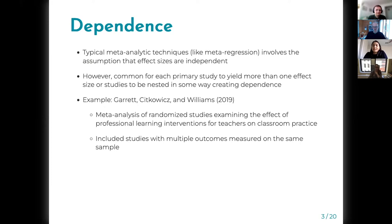Typical meta-analytic techniques like meta-regression involve the assumption that effect sizes are independent. It's basically the independence assumption in a regression model, but it's common for each primary study to yield more than one effect size, or for studies to be nested in some way creating dependence among the effect sizes.